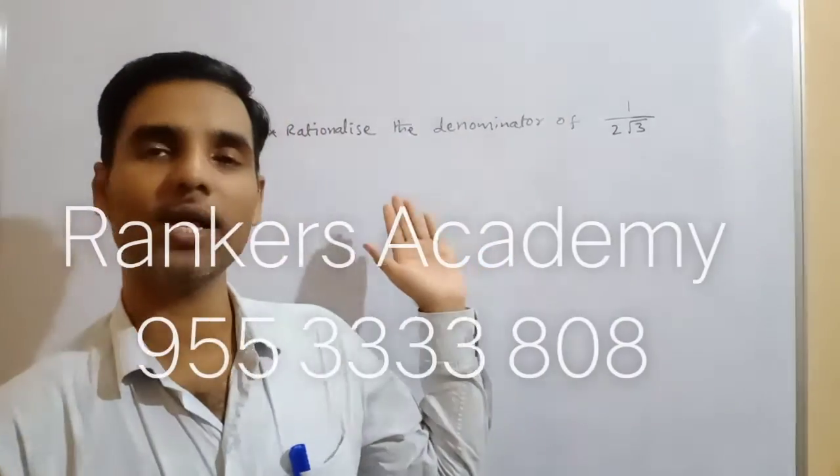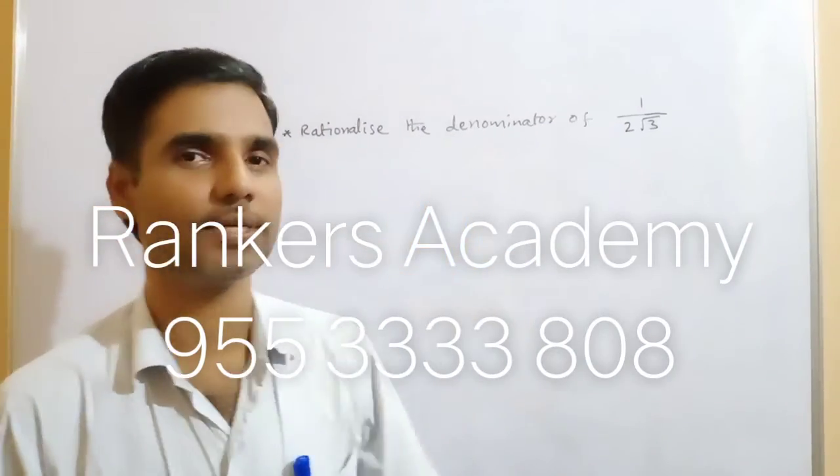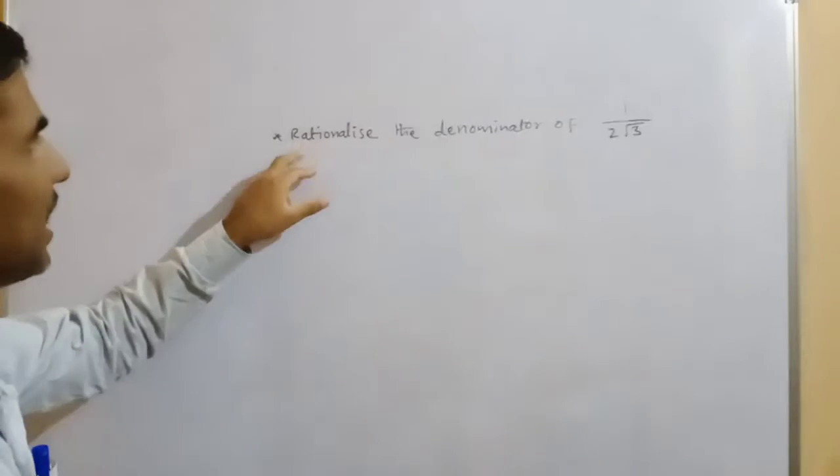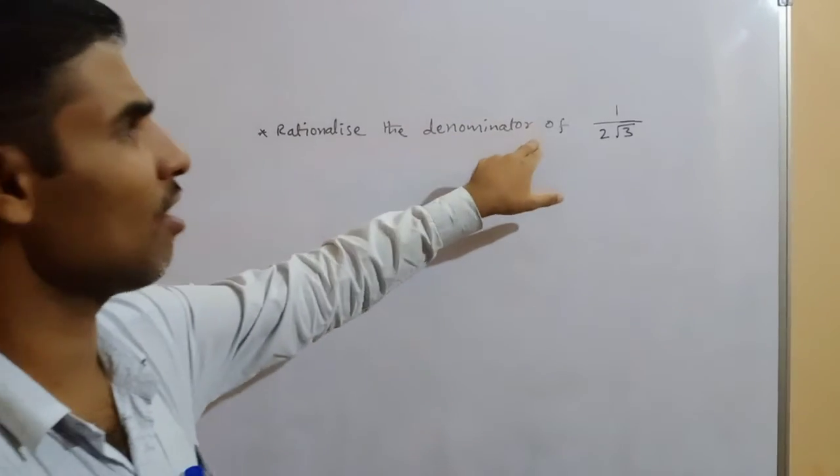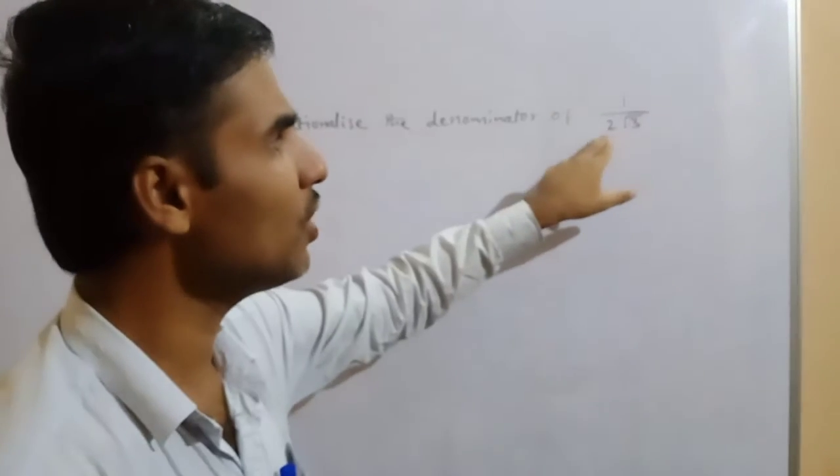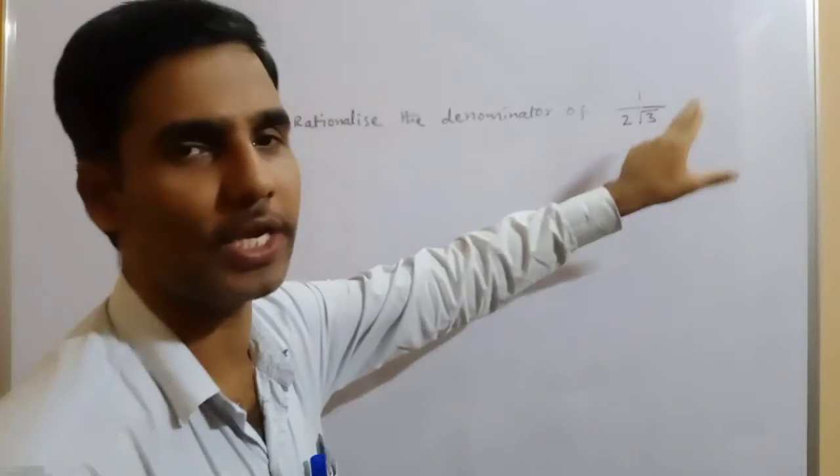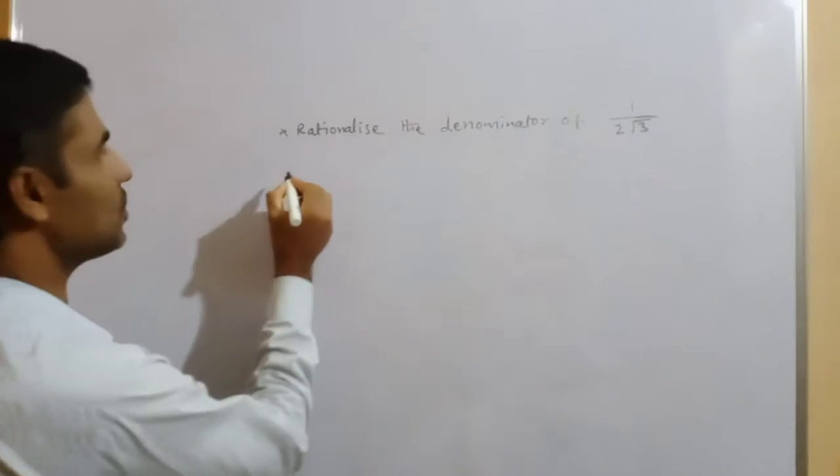See ma, this model, second model we are discussing. See here, rationalize the denominator of 1 divided by 2 into root 3. See solution here.